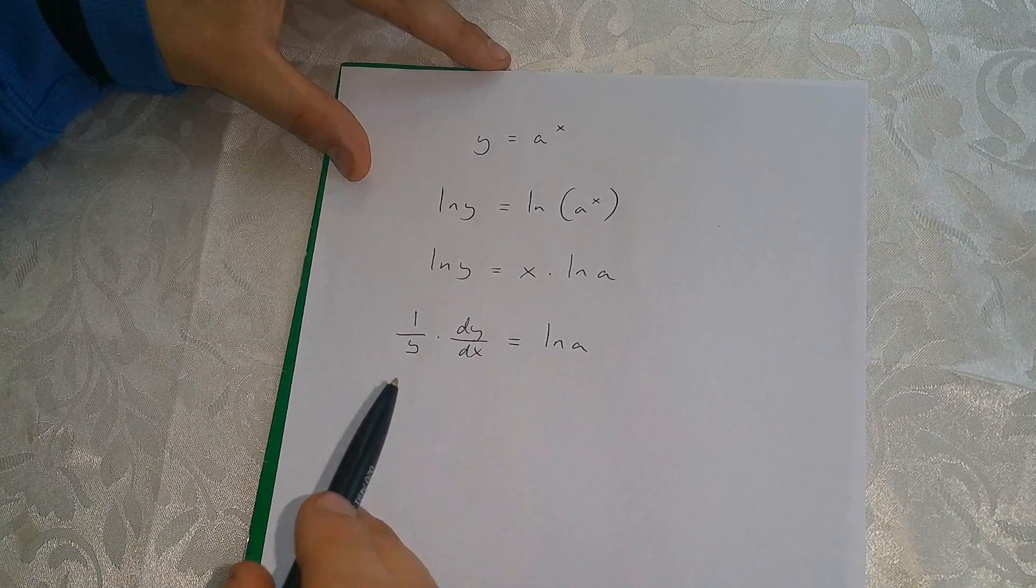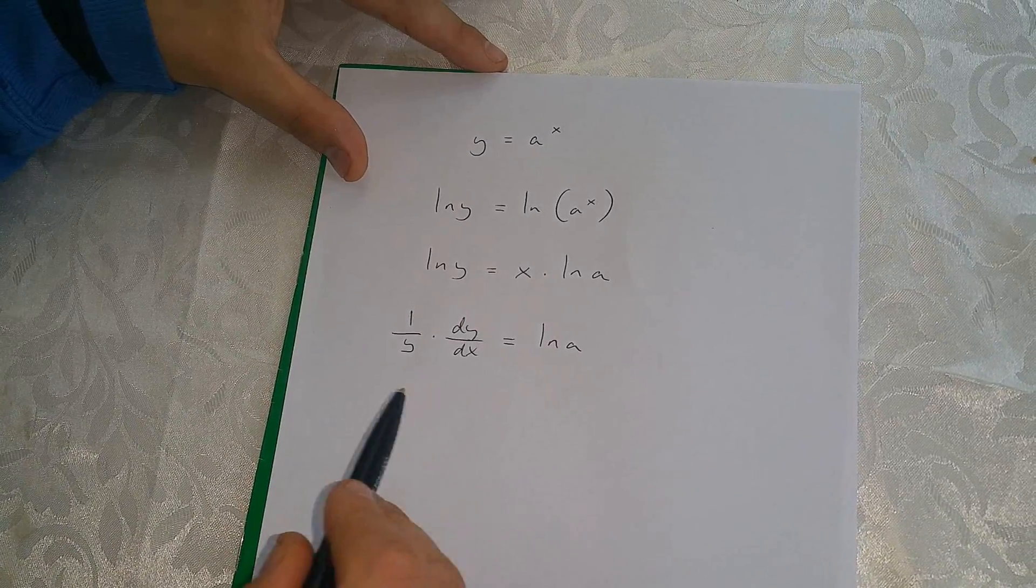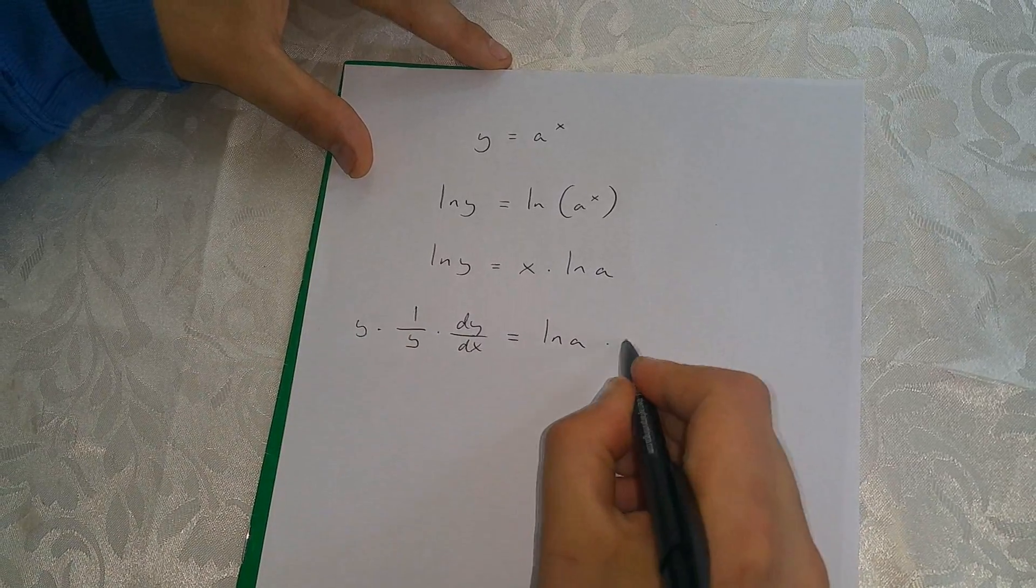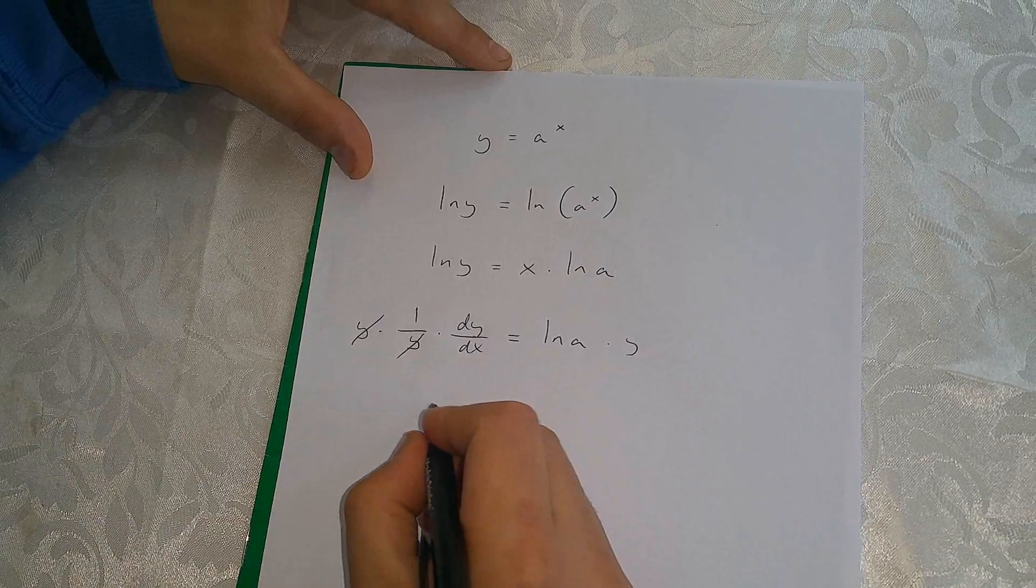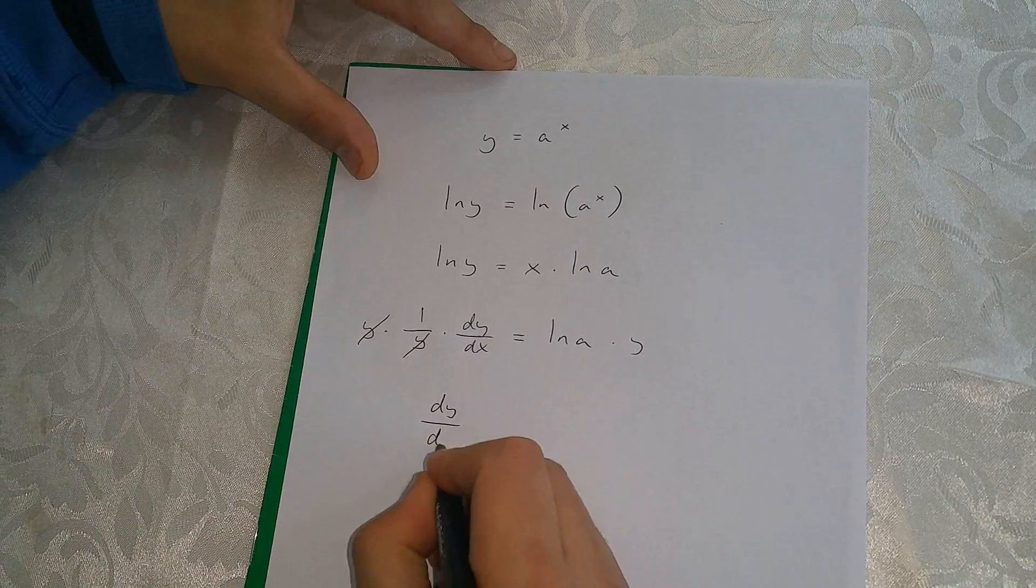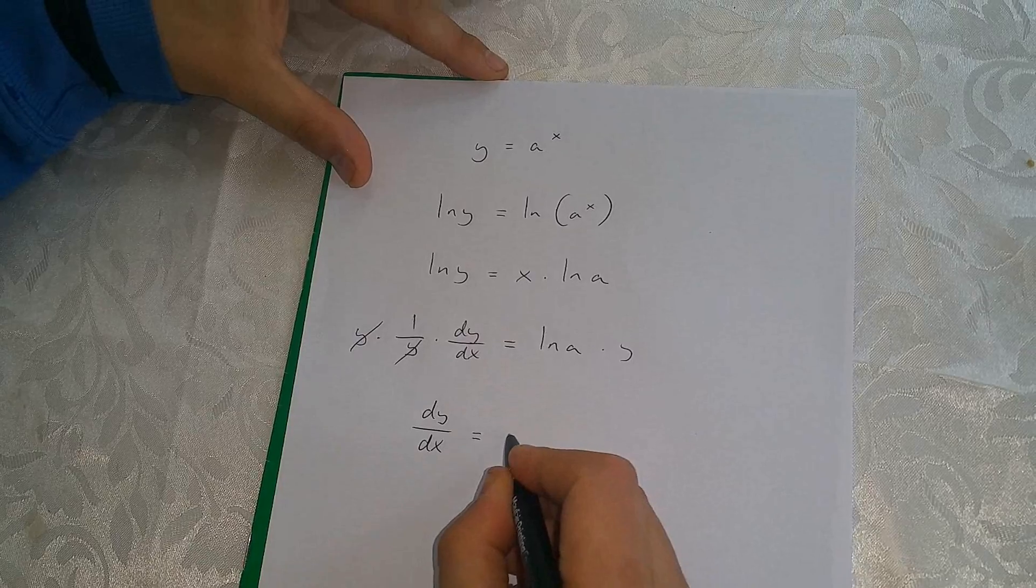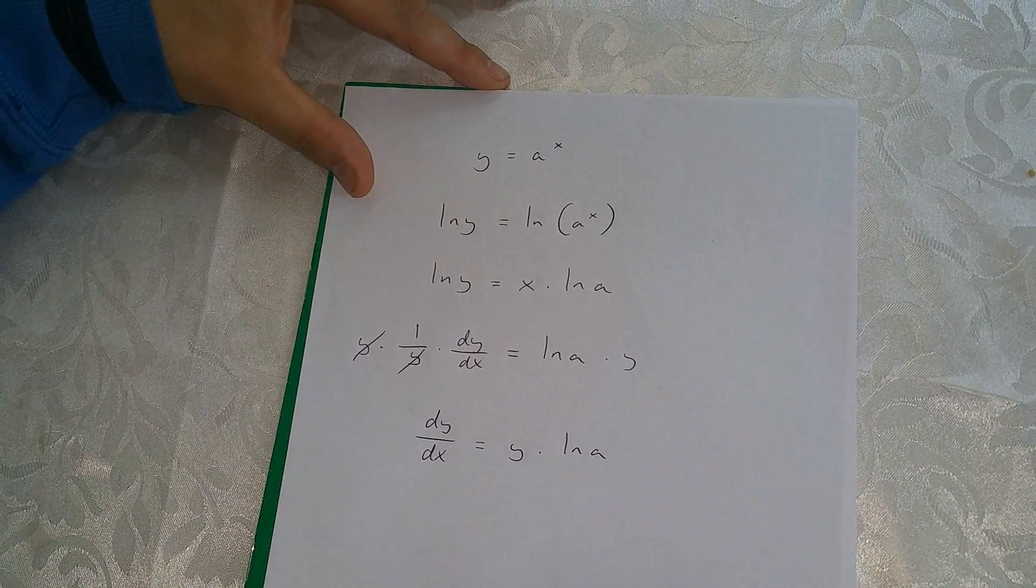Now we're going to multiply both sides of this equation by y. As a result, we're going to be left with dy over dx equals y times ln a.